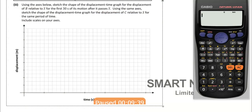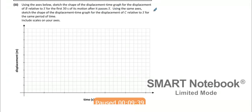As discussed earlier, let's sketch the shape of the displacement time graph for displacements of B relative to S for the first 30 seconds. So 5, 10, 15, 20, 25 and 30.